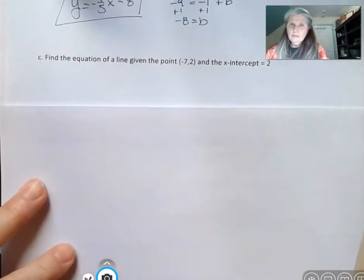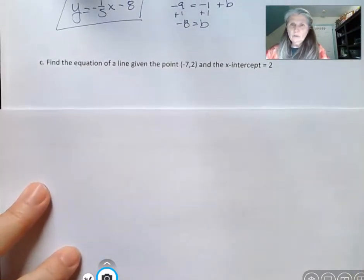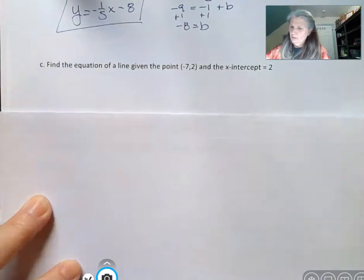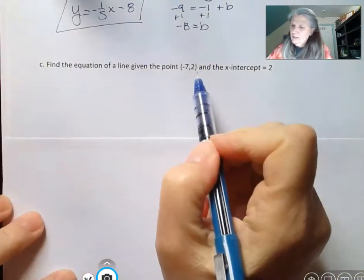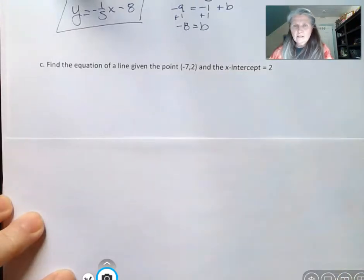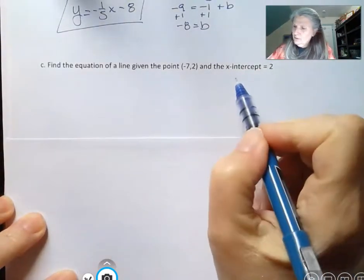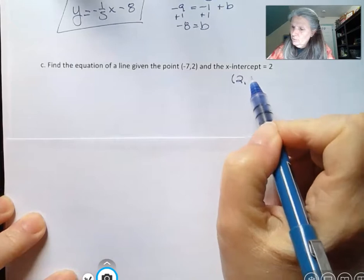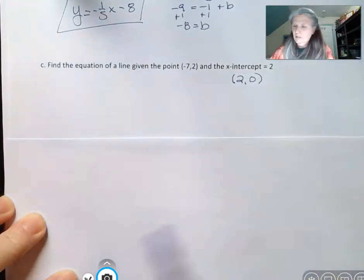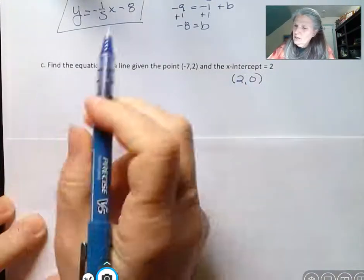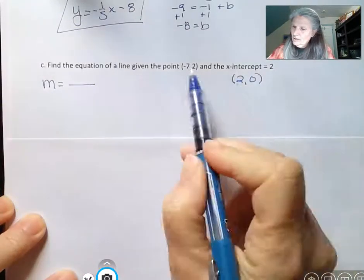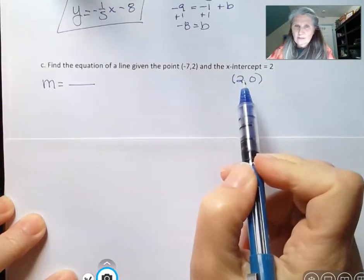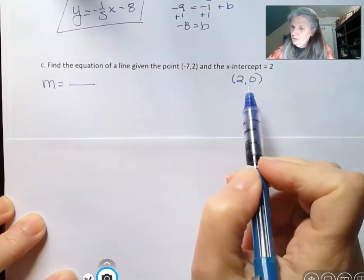Alright, and here's a couple more that are a little more difficult, but I wanted to show this method with different ways. Right here, they tell you that we have the point negative 7, 2, and an x-intercept of 2. Well, x-intercept, I know, is what we get when y is 0. So that's a point, and this is a point. So now what I'm going to do is find the slope by finding the slope between these two points of that line. They didn't give us the slope in this question.